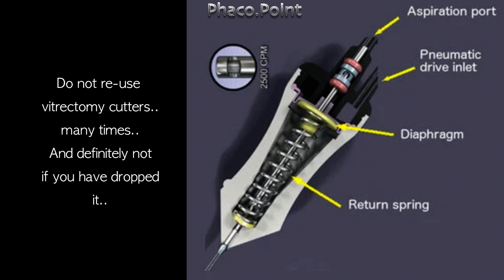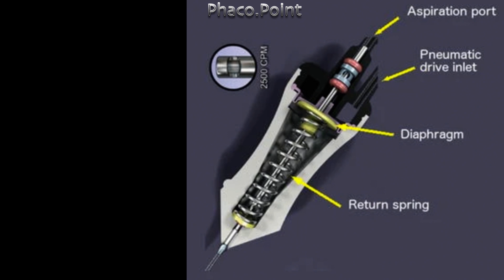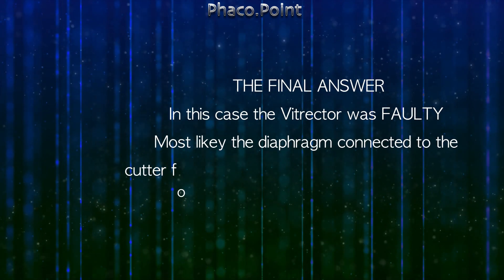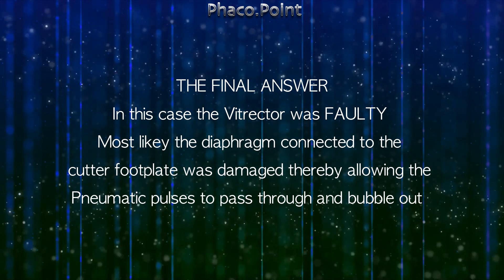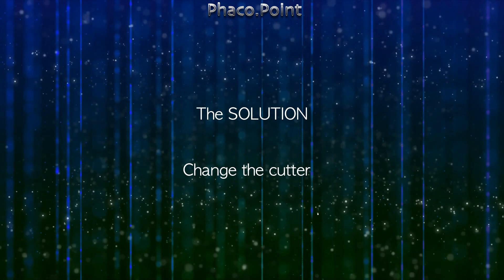This happens when you ETO sterilize several times or if you inadvertently drop the vitrector handpiece. The final answer is that there is nothing wrong with the tubing; even a reflux button will not cause air bubbles to bubble out — just a little amount of fluid reflux — and the problem lies in the vitrector. So if you have a problem like this, you can try to change the vitrectomy unit and see if it is functioning normally, which is what happened in my case. I thank you for your attention.